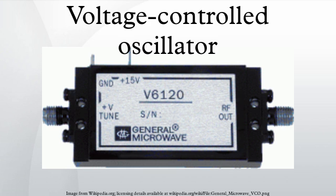A voltage-controlled capacitor is one method of making an LC oscillator vary its frequency in response to a control voltage. Any reverse-biased semiconductor diode displays a measure of voltage-dependent capacitance and can be used to change the frequency of an oscillator by varying a control voltage applied to the diode. Special-purpose variable capacitance diodes are available with well-characterized, wide-ranging values of capacitance, and are very convenient in the manufacture of voltage-controlled oscillators.